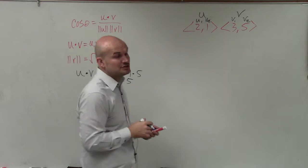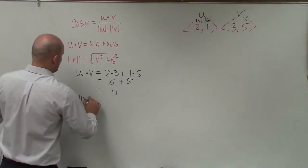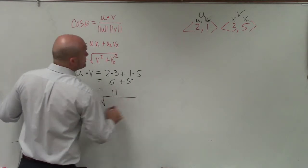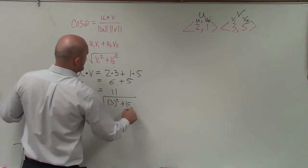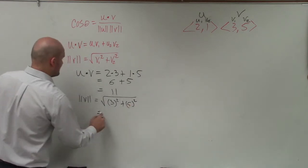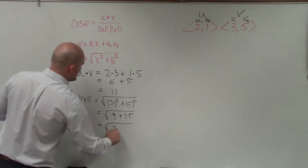Now let's go ahead and determine the magnitude. So the magnitude of v is equal to the square root of v1 squared plus v2 squared. And that's going to equal the square root of 9 plus 25, which equals the square root of 34.